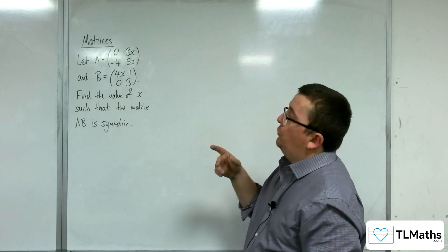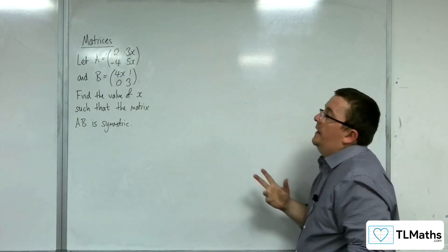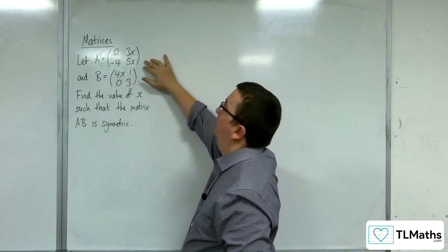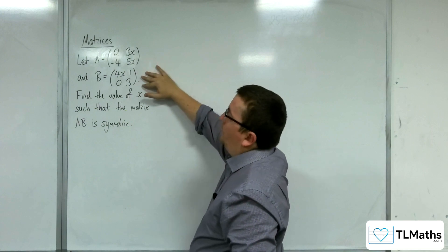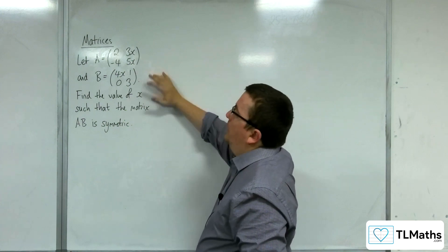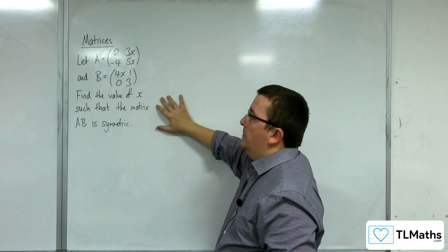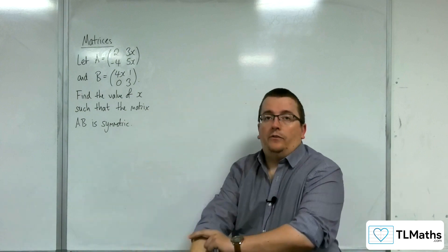In this problem we have two 2 by 2 matrices. A is 2, 3x, minus 4, 5x, and B is 4x, 1, 0, 3. We need to find the value of x such that the matrix AB is symmetric.